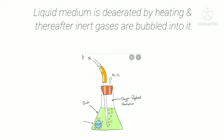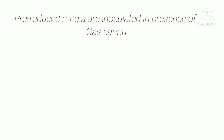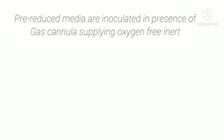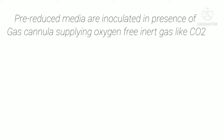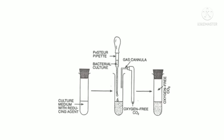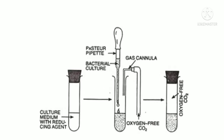Inert gases like nitrogen are bubbled through the liquid medium in order to displace the oxygen. Pre-reduced media are inoculated in the presence of a gas cannula supplying oxygen-free inert gases such as carbon dioxide or nitrogen. A pre-reduced medium is inoculated with the culture of anaerobic bacterium in the presence of a gas cannula supplying oxygen-free CO2, and thereafter the tube is incubated anaerobically.